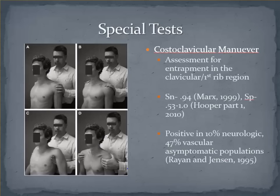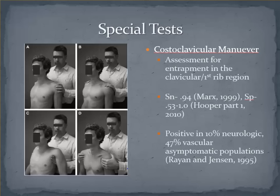The costoclavicular maneuver, or the military brace test as it's sometimes called, assesses for entrapment mostly at the first rib. The first two portions of the test labeled A and B should be provocative maneuvers, and the assessment can be for either a pulse change or neurologic symptoms up to about 30 seconds. If the test is then performed in the relieving position C — if the symptoms were reproduced in the B position — and in position D if positive in position A, you will see another version of this test that extends the arm to about 30 degrees unilaterally in the depressed and retracted position, which is biased more toward a pulse assessment. The same type of reporting applies as with Adson's — there is better sensitivity than specificity, with some false positives most predominantly with vascular findings.